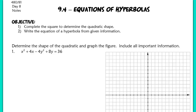This lesson is for section 9.4 on writing equations of hyperbolas. We have two objectives for today. We're going to complete the square so that we can determine what type of quadratic shape we have, and after we decide which conic section we have, we'll go ahead and graph it. Our second objective is to write the equation of a hyperbola when we are given specific information.